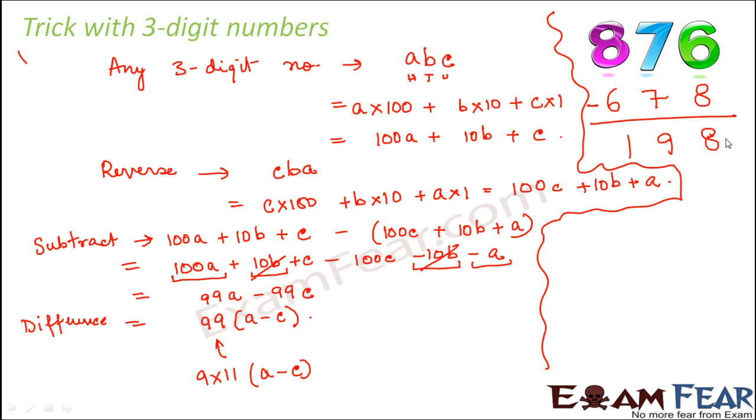Now the next step would be we can ask our friends to divide it either by 99 or by 9 or by 11. So what happens when you divide 198 by either 9 or 11 or 99? Let's see what result we get. When you divide by 9: 9 into 18, again 9 into 18. It completely divides, so 22 is the quotient and the remainder is 0.